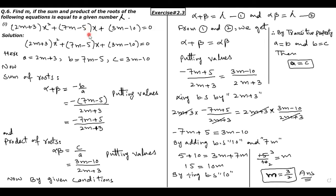Asalaamu alaykum students, once again Class 10 Mathematics mein Chapter 2, Exercise 2.3, Question 6 — last question of Exercise 2.3. Isme hame 'm' ki value point karni hai with some condition. Condition yeh hai: if the sum and product of the roots of the following equation are equal to a given number lambda. Yahan par lambda koi bhi number hai.